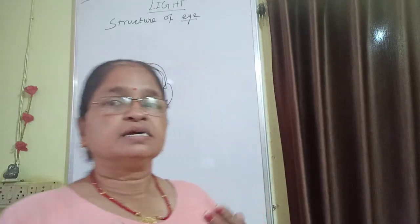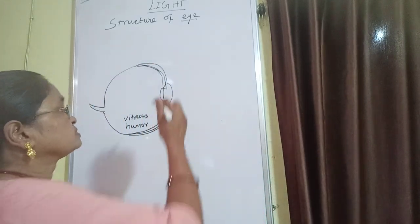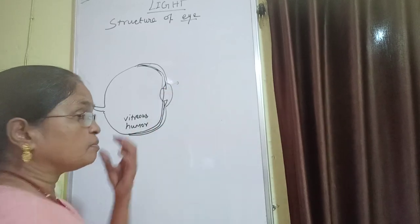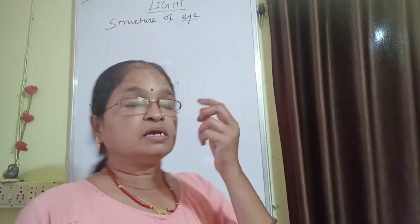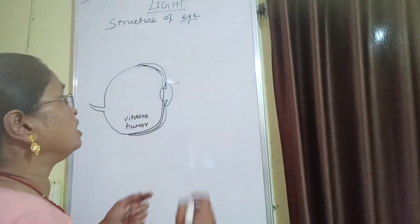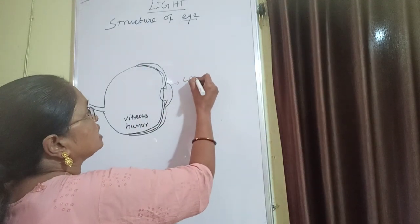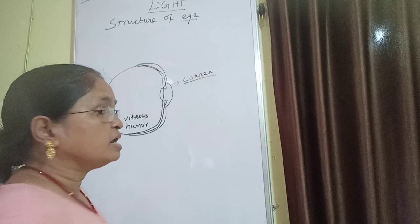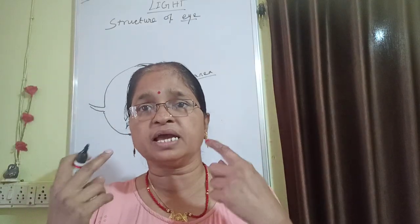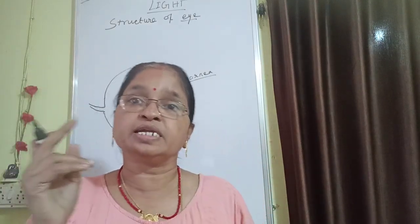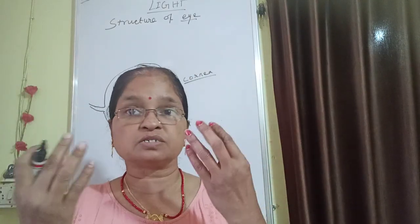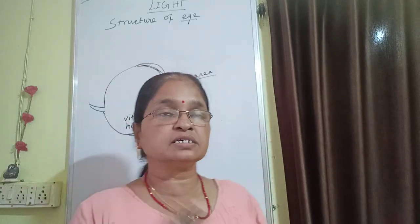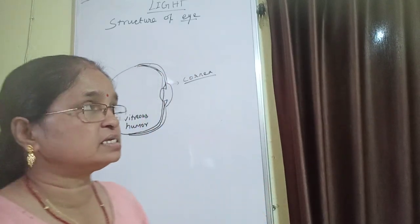Now let us start. We are seeing an eyeball — a black colored ball is there. That ball is known as the cornea. Light does not pass from the sclera, that is the white portion. Light always passes from the cornea. So cornea allows light to enter inside the eye.